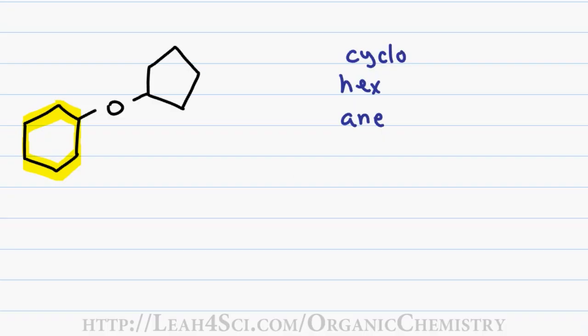Since my oxy substituent is 5 carbons in a ring, I have the prefix cyclopentoxy. The number 1 is understood given that I have nothing else on the molecule giving me a final name of cyclopentoxycyclohexane.